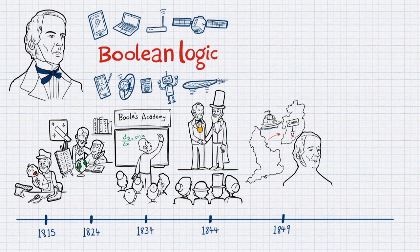In 1849, he was invited to University College Cork, Ireland, to be the first professor of mathematics.